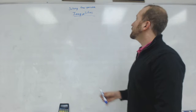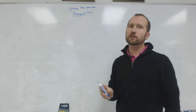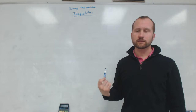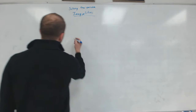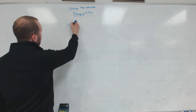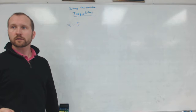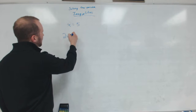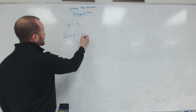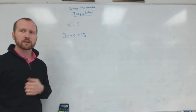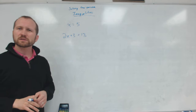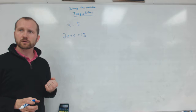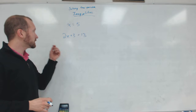Solving one variable inequality. First we're going to look at what is an inequality — what does that mean? We're used to seeing things like X equals 5, or maybe we would start with 2X plus 3 equals 13 and solve it to find that X equals 5. We're used to seeing equations where X has a certain value — X is equal to a number.